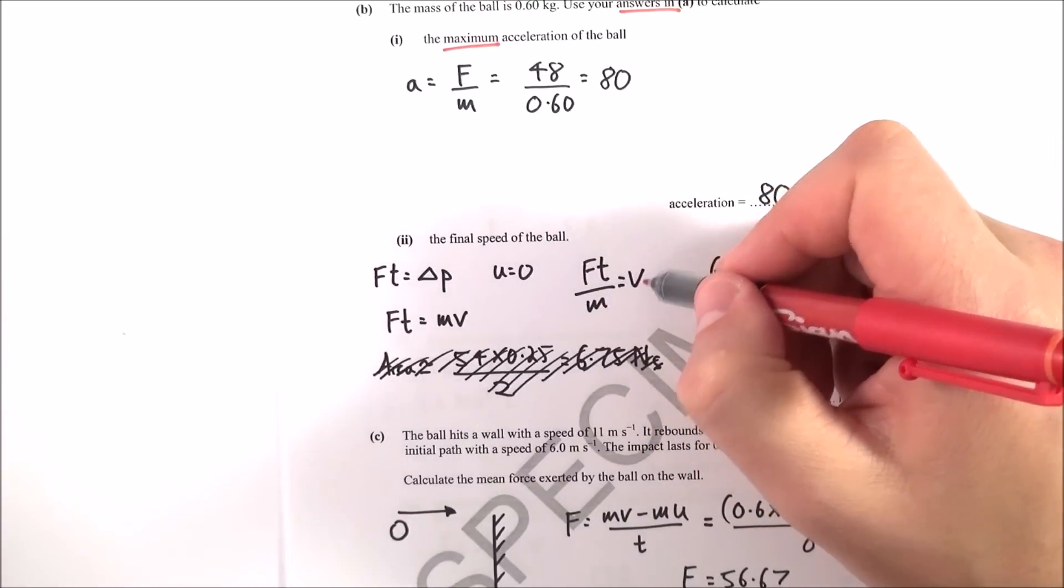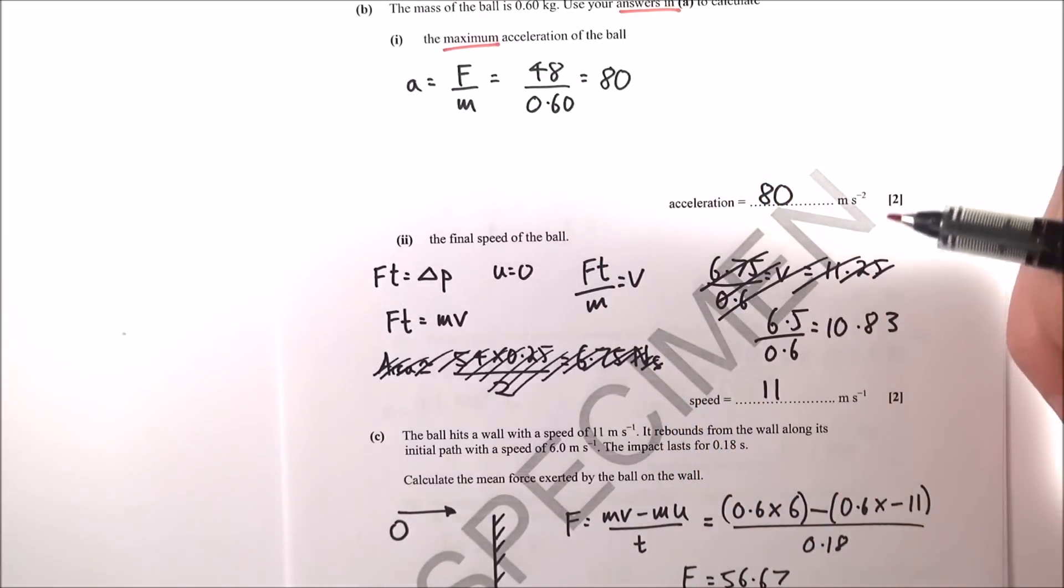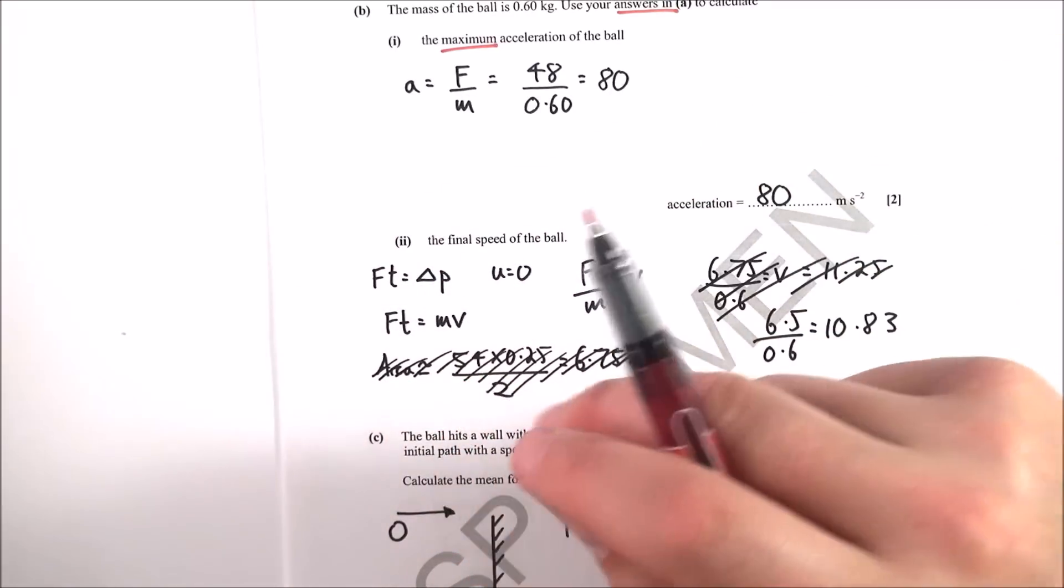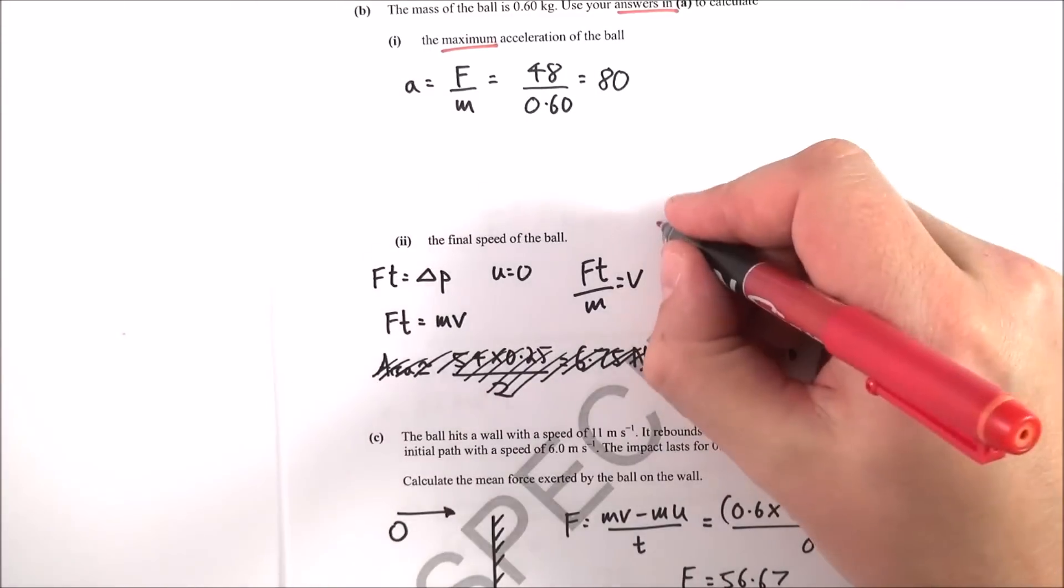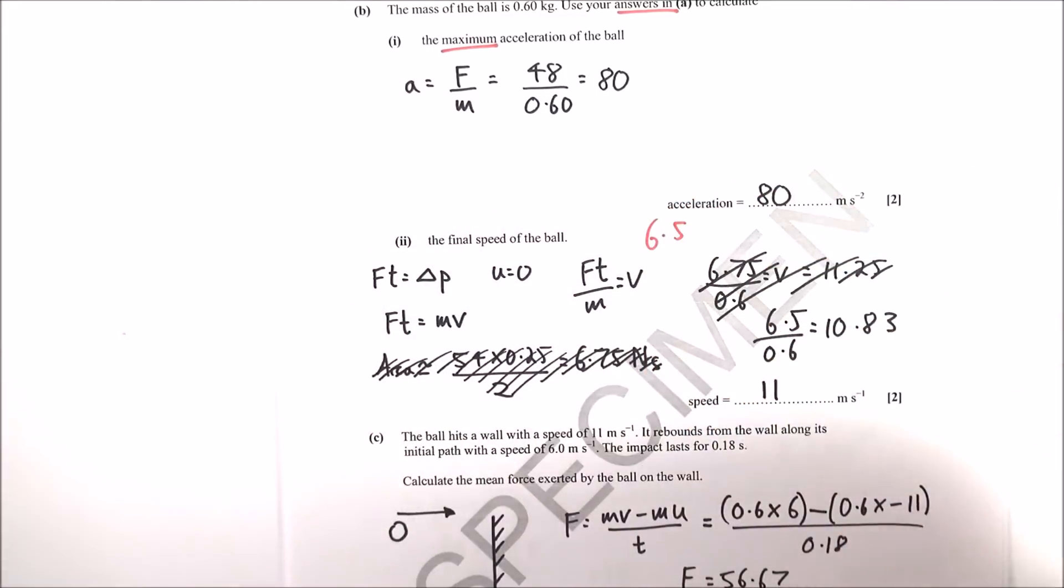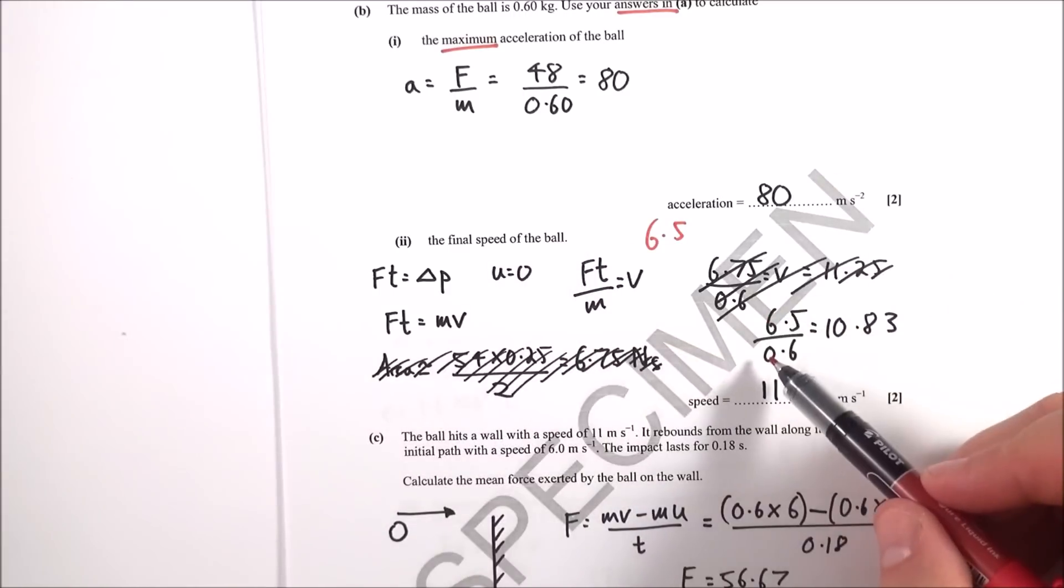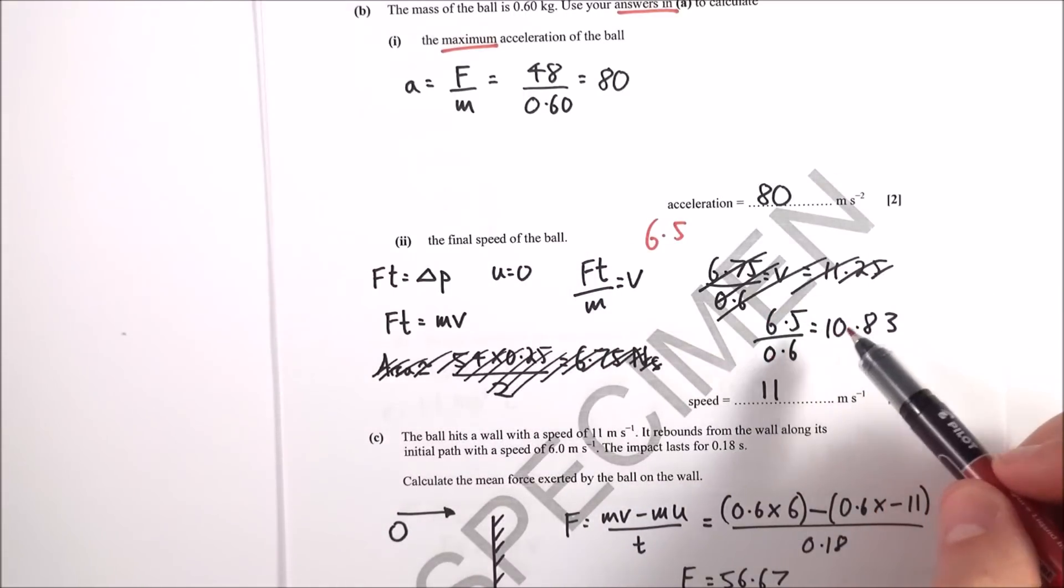The first time I did this, I didn't read the question - I worked out the area under the graph, but they actually gave you the impulse as 6.5 in the previous question. So impulse is 6.5, mass is 0.6, which gives a final velocity of 10.83, or 11 meters per second to two significant figures.